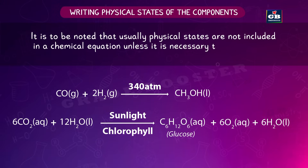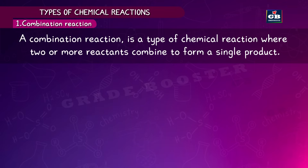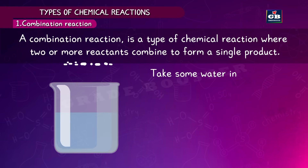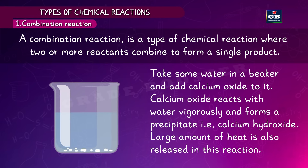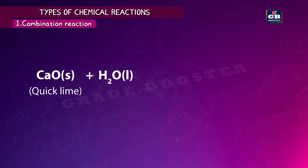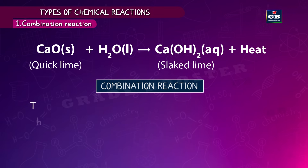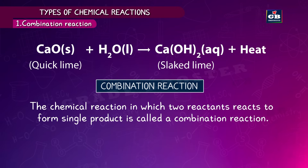Physical states are not usually included in a chemical equation unless necessary. A combination reaction is a type in which two or more reactants combine to form a single product. For example, calcium oxide reacts with water vigorously to form calcium hydroxide, releasing a large amount of heat. Two reactants — water and calcium oxide — react to form a single product, calcium hydroxide.